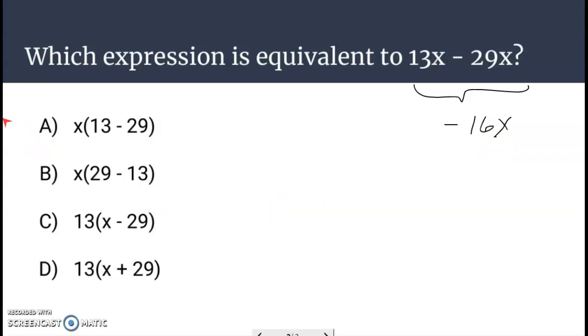Let's start with D and just work our way up and see if we can get lucky. We're going to distribute 13 to the x and 13 to the 29. Well, that gives us 13x plus 377. Can't simplify that down and that certainly does not match our negative 16x. So D's out.